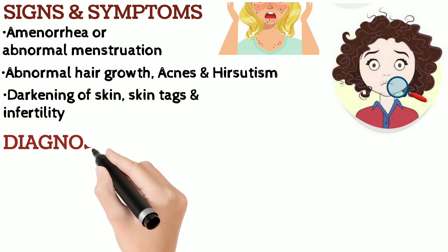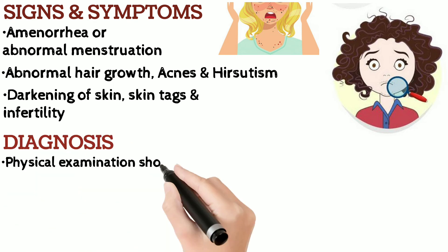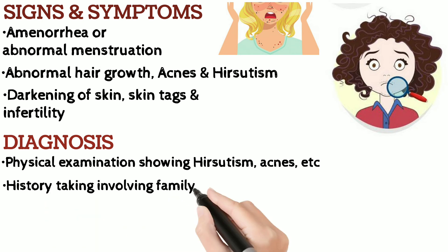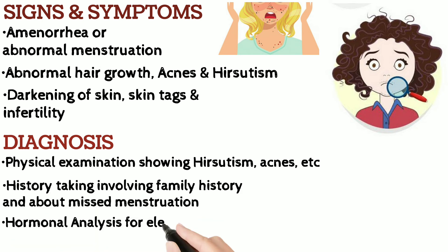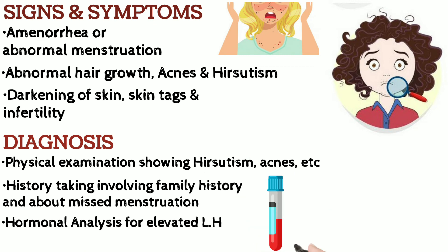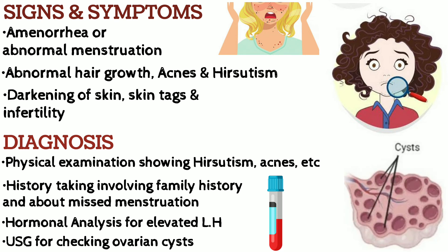Primary diagnosis of PCOS is based on physical examination and history taking. Hormonal assay for elevated luteinizing hormone is an important test for confirmational diagnosis, which is often done along with ultrasound for checking ovarian cysts.